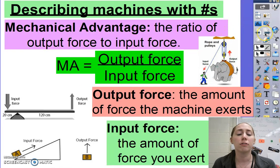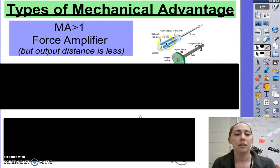So with mechanical advantage, there are three things you need to know about it. If the mechanical advantage is greater than one, it means that simple machine is a force amplifier. But because we can't change the amount of work, that means the output distance is less.